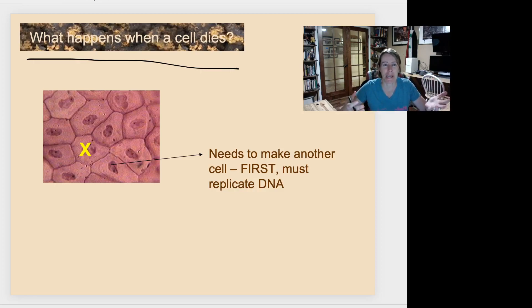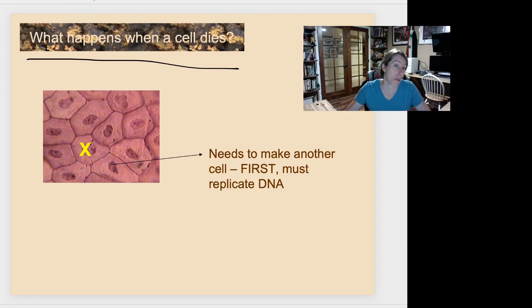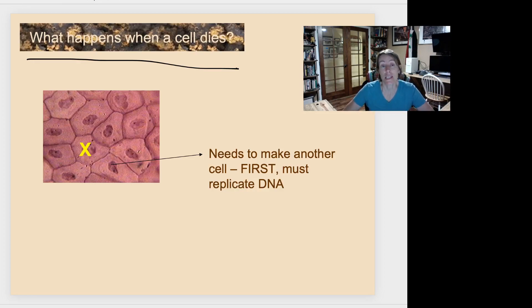In skin it doesn't happen side by side, it happens from underneath, but the basic idea is the same: an adjacent cell needs to get bigger and divide into two to create a new cell to fix the gap. It doesn't have to be when a cell dies — it could also be when an organism is growing. So when you need to create new cells, existing cells divide into two and must split everything they have between the two new cells.